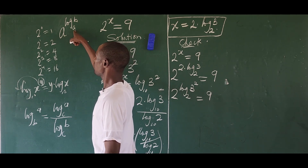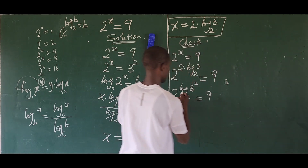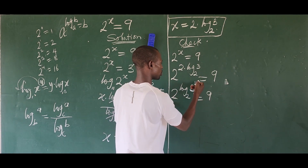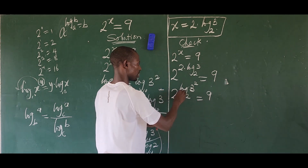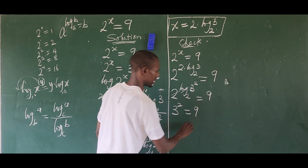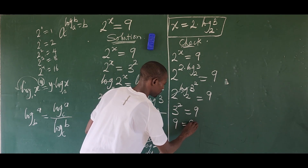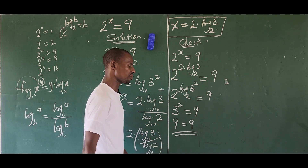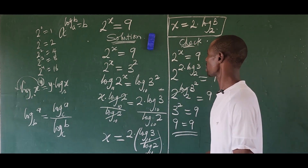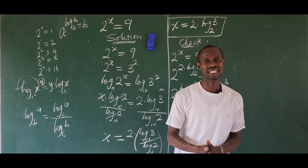Here we have 2 to the power of log base 2 of (3 squared). Applying that law, this simplifies to 3 to the power of 2, which equals 9. And indeed 3 squared is 9, so 9 equals 9. This confirms that x equal to 2 times log base 2 of 3 satisfies the original equation.